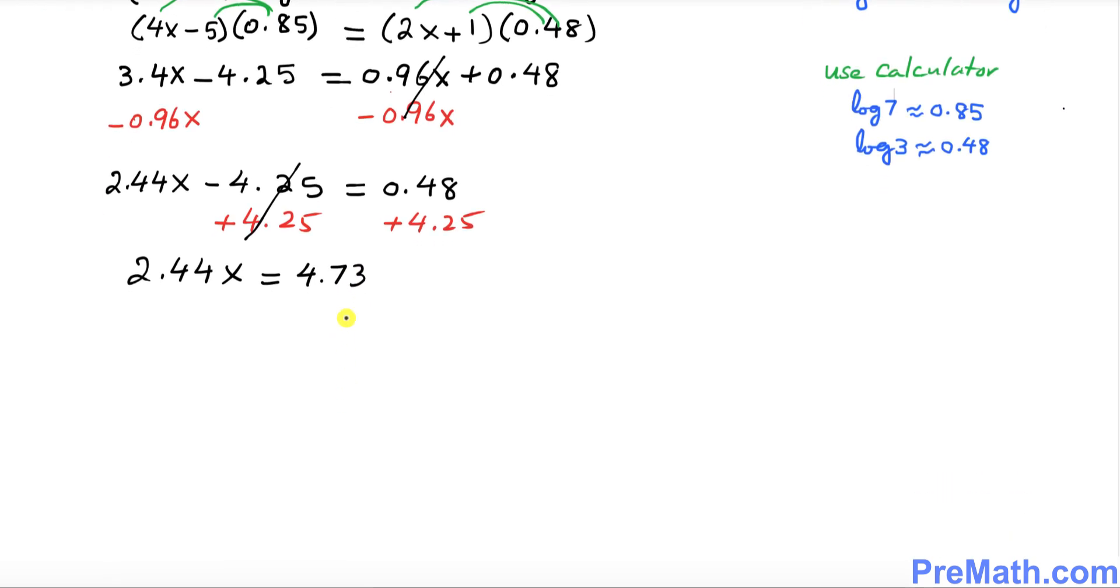Now the final step: divide both sides by 2.44. Thus our x value is approximately 1.94, and that is our answer.